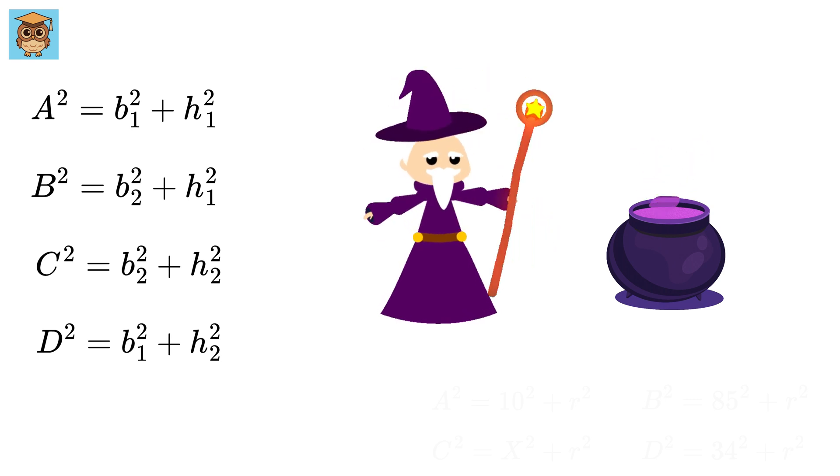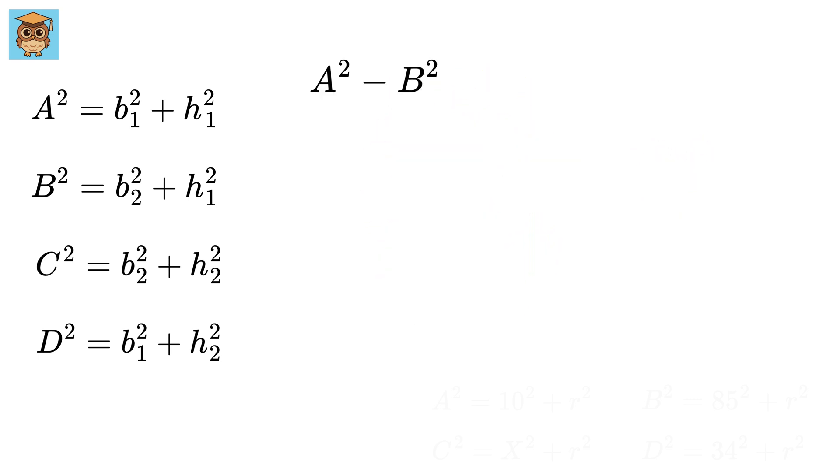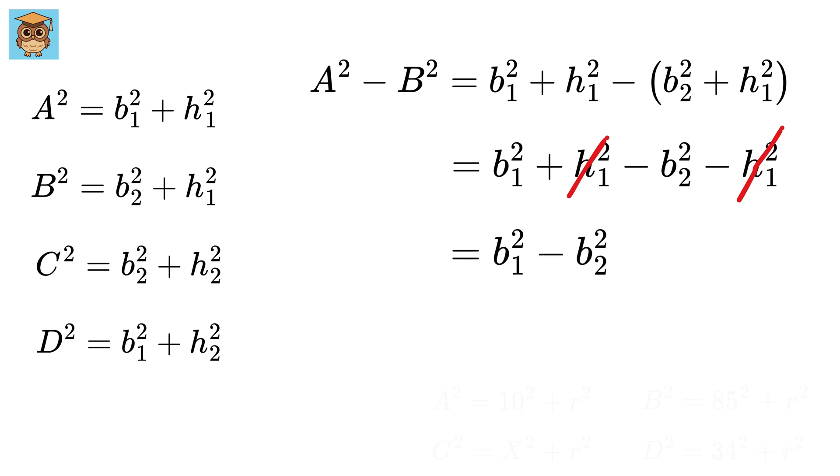Now, here comes the magic. Subtract a square with b square to get this minus this. Expand it to get this. Oh, look, h1 square gets cancelled and we are left with b1 square minus b2 square.